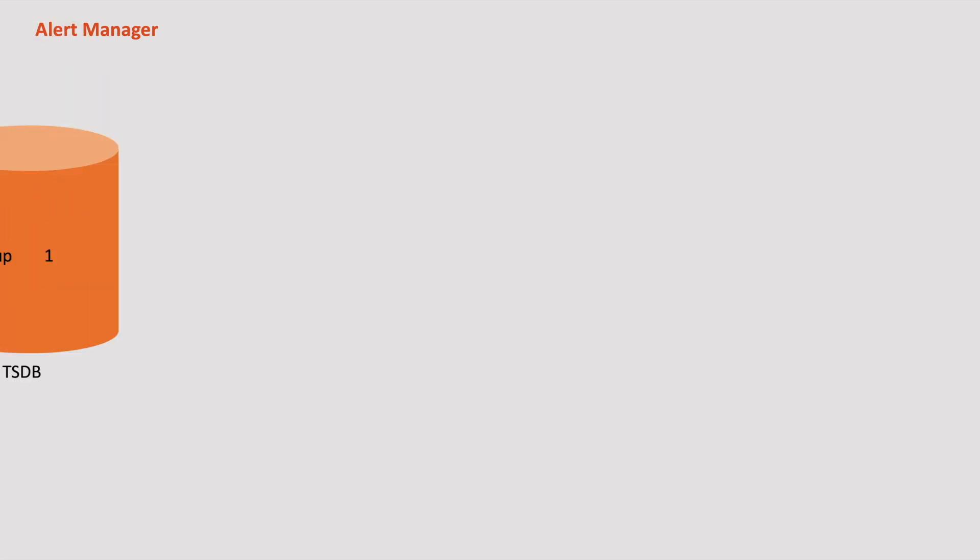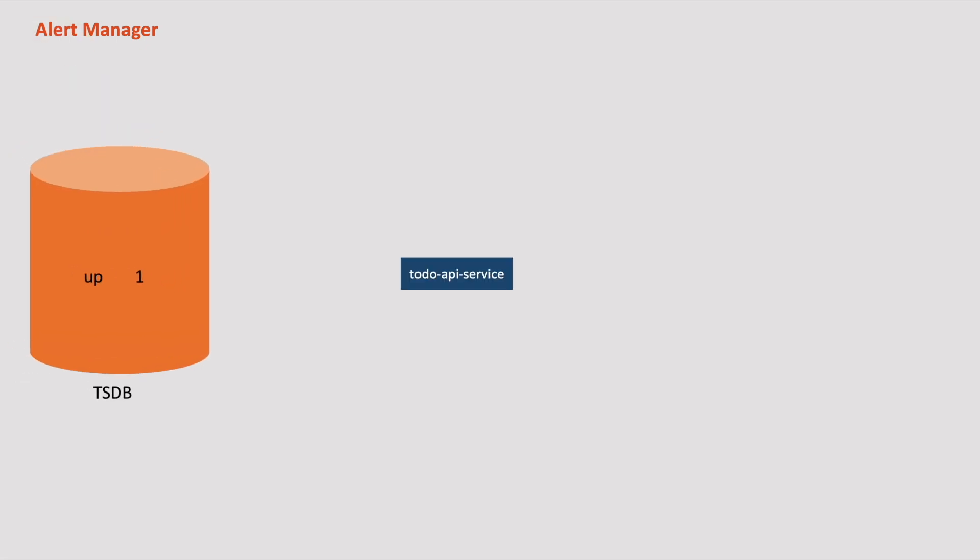Hey guys, wouldn't it be great if you could receive notifications when something goes wrong? For example, now that we have metrics stored in Prometheus, we might want to get a notification when our service goes down. That's our topic for this chapter. Let's explore how to get notified of an event using Prometheus Alert Manager with complete hands-on. So without any further delay, let's get started.